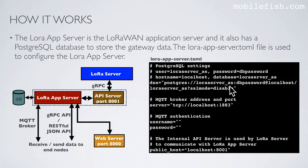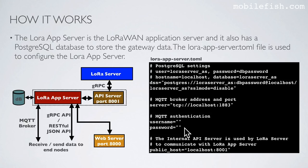The username in this example ends with underscore AS. This is the database password, hostname, and database name — which ends with underscore AS. SSL is not used. This is the MQTT broker address and port, and MQTT authentication is not set. This is the internal API server address and port. The LoRa server, LoRa app server, and MQTT broker are installed on the same server, as indicated by the use of localhost here and here.